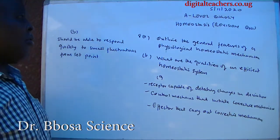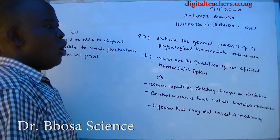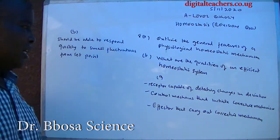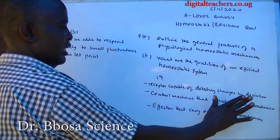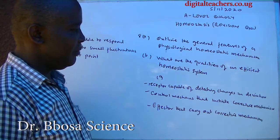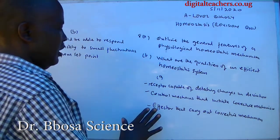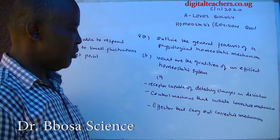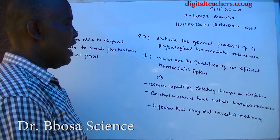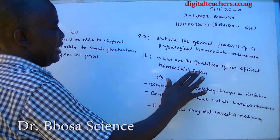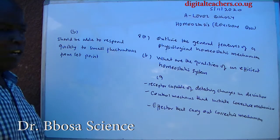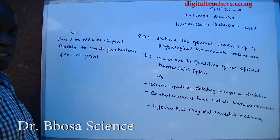Number eight A: outline the general features of a physiological homeostatic mechanism. One: should have a receptor capable of detecting changes and deviations. Two: should have a control mechanism that initiates corrective mechanisms. Three: should have an effector that carries out the corrective mechanism. B: It should be able to respond quickly to small fluctuations from set points.